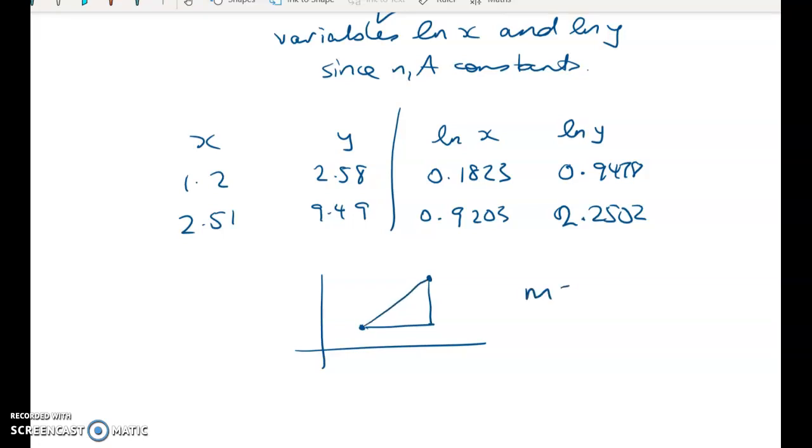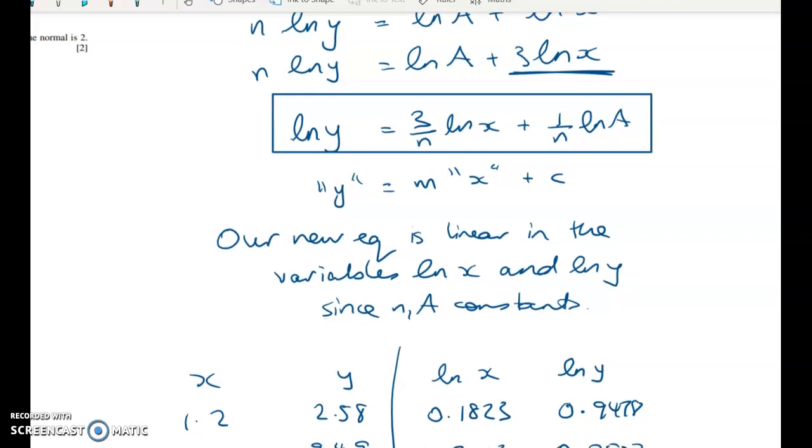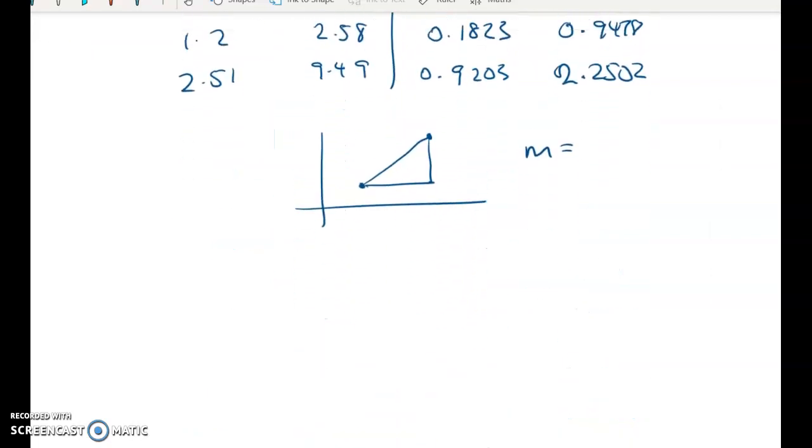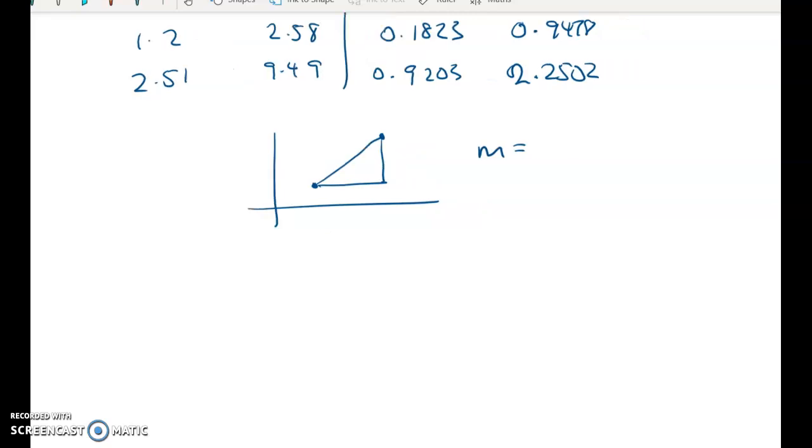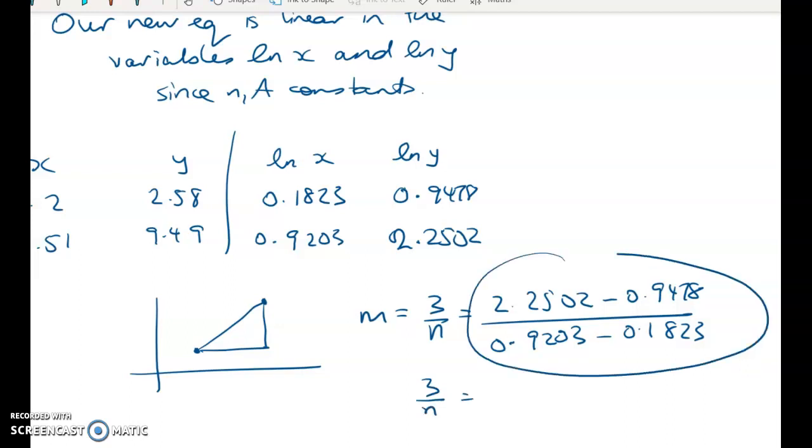So m, in this case, is going to equal, so m is equal to this value here of 3 over n. Sorry, I'll just move my screen around. So m is 3 over n and that's my rise over my run. So it's going to be 2.2502 minus 0.9478 divided by what's in the bottom line. So 0.9203 minus 0.1823. So that gives me 3 over n is equal to, well, when I work all of this out, I get 1.7649.